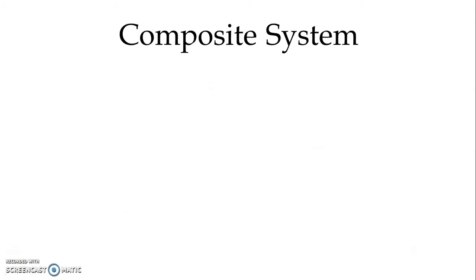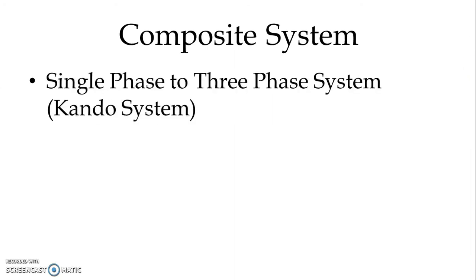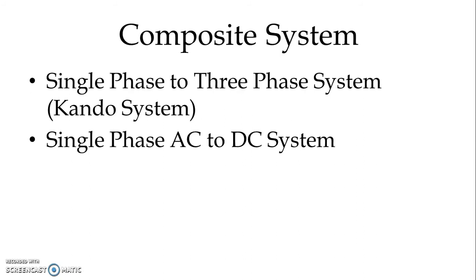We have seen the DC system and the AC system for traction electrification. Both have certain advantages and disadvantages, and neither system has all the good points. Therefore, we use a composite system — a combination of any two of the systems discussed — to take all the advantages of both. The composite system uses either a single phase to three phase system, known as the Kundo system, or a single phase AC to DC system. The single phase AC to DC system is very popular and is used for most track electrification in India.